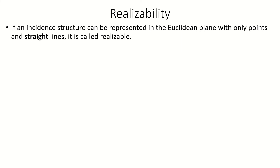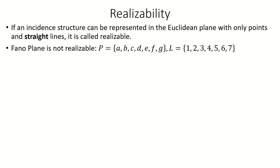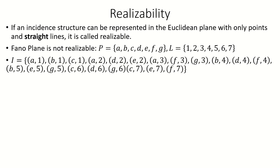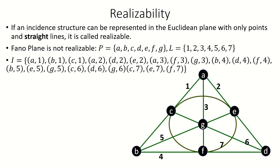One example of an incidence structure that is not realizable is the Fano plane, which is defined to have the point set a through g, line set one through seven, and the following incidence relation. It requires the use of one curved line — in this labeling representation, that would be line 7, which appears as a circle. This circle is just the pictorial representation of line 7, incident to points C, E, and F.